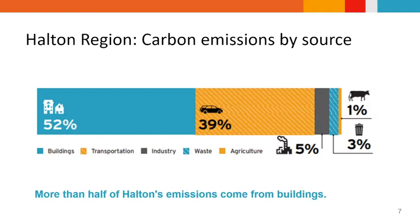Some important historical context for Halton Hills specifically: Halton Hills declared a climate emergency in 2019, and there are many municipalities across the GTHA that have done that as well. We really love seeing the activism on that front. Additionally, the town was the first in the Halton region to develop a green development standard — GDS — in 2014. That's what we'll get into going forward. If you hear me say GDS, that's just the acronym short form.